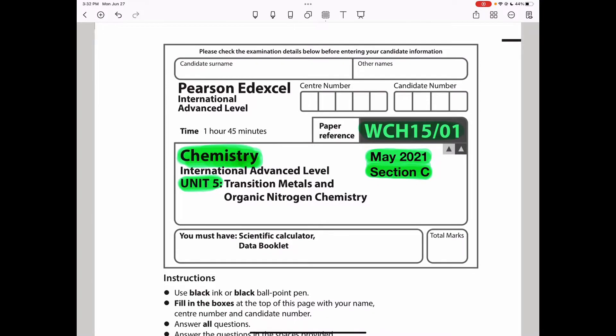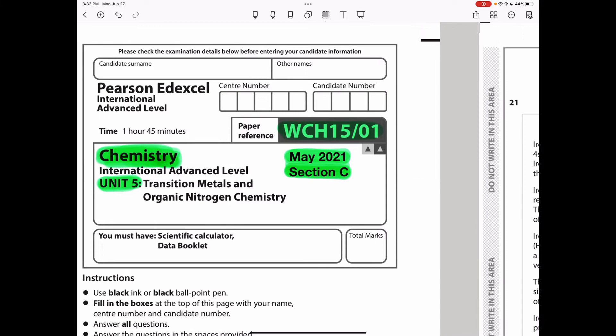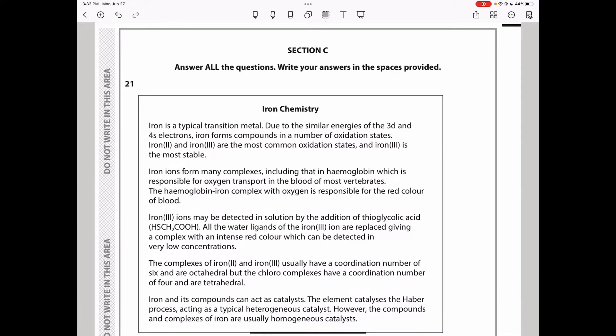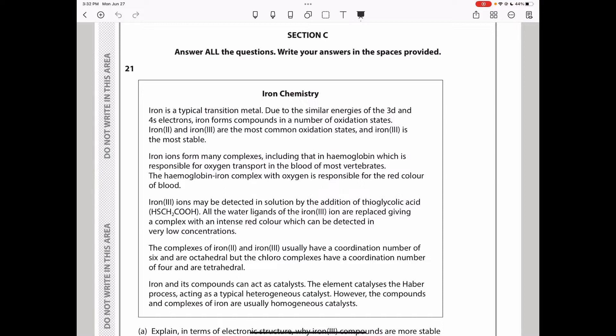Let's go straight to the question we're looking at today. Question 21 says: Iron is a typical transition metal due to the similar energies of the 3d and 4s electrons. Iron forms compounds in a number of oxidation states.